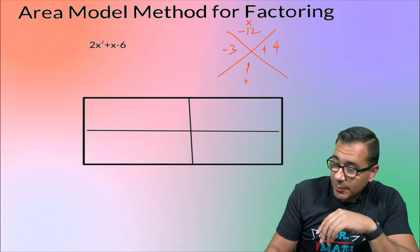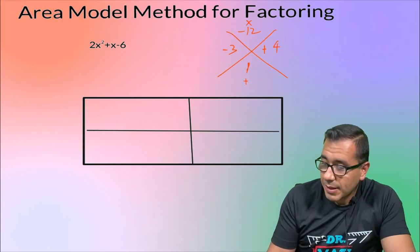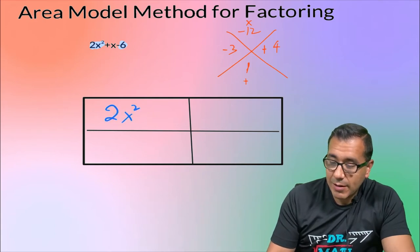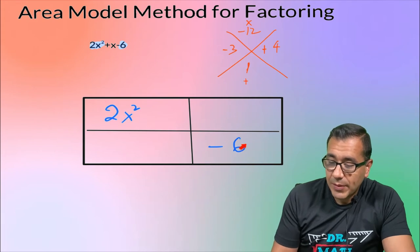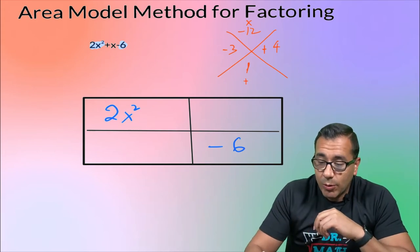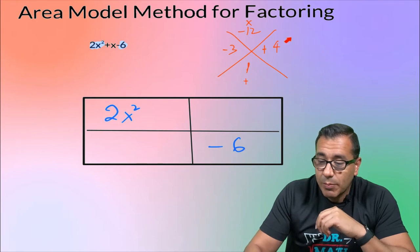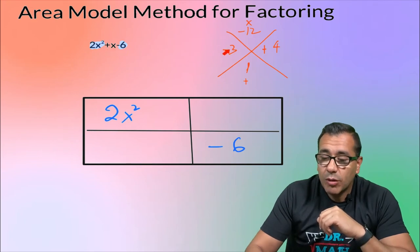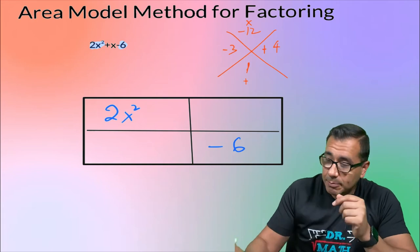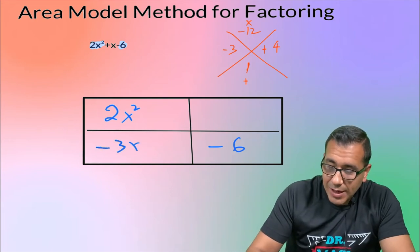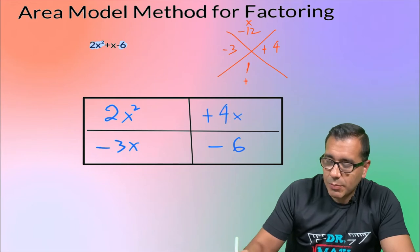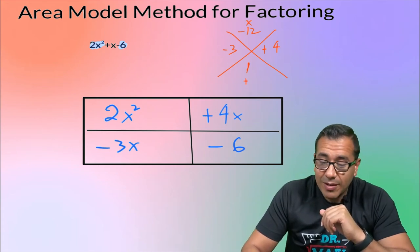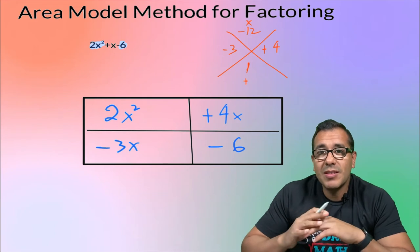So let's build in our pieces. I'm going to highlight these because those are going to stay — that's our first term and our last term, and those always go in their respective places. For the two missing boxes, this is where we put the two factors we just found. Since the middle term had an X variable, both of these are going to have an X variable. So this is going to be negative three X and then plus four X. The order here doesn't matter — I could have put four X here and negative three X here.